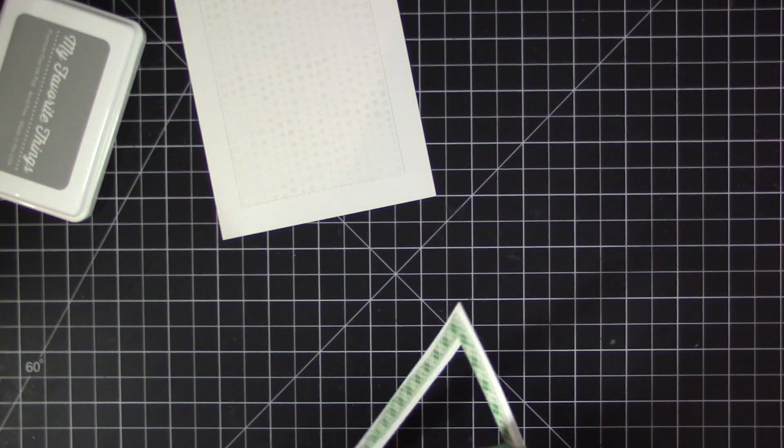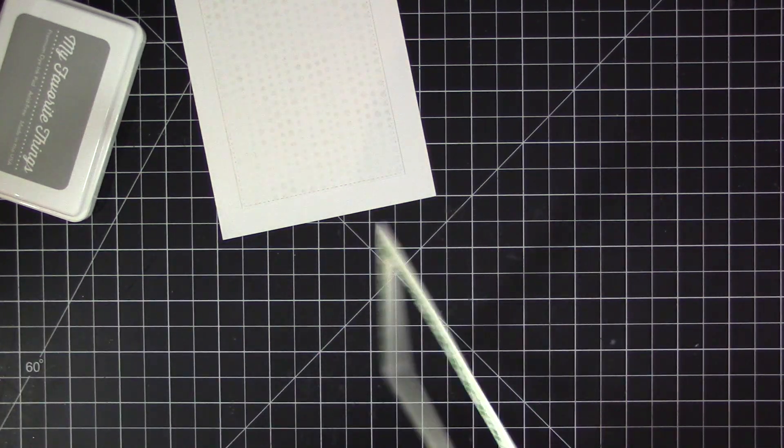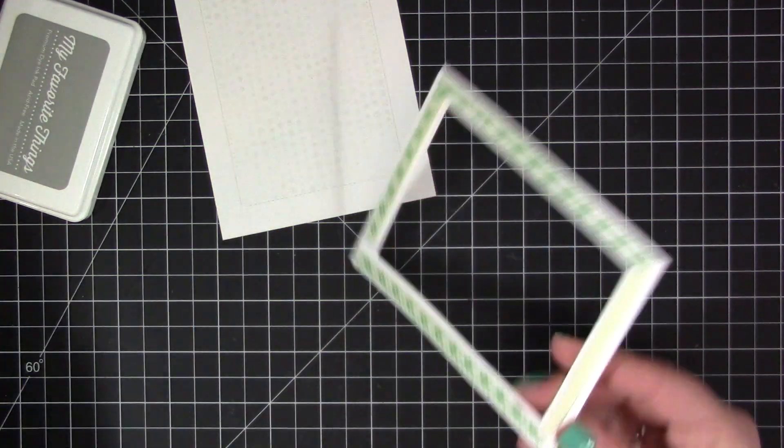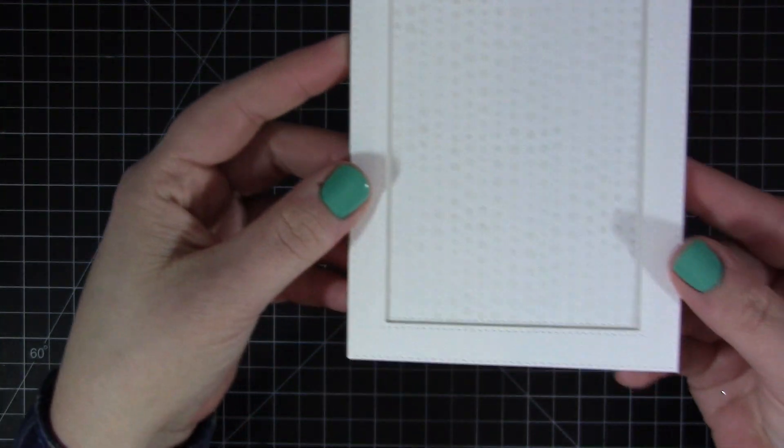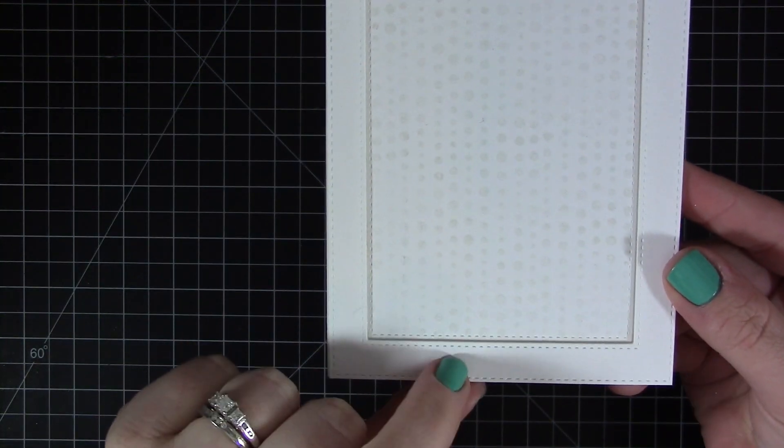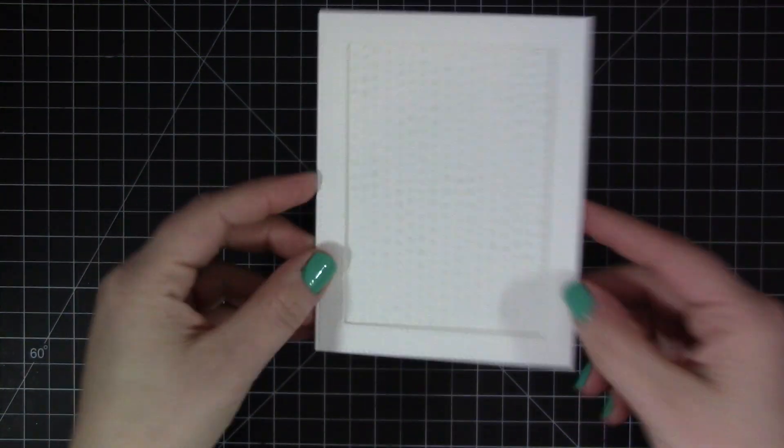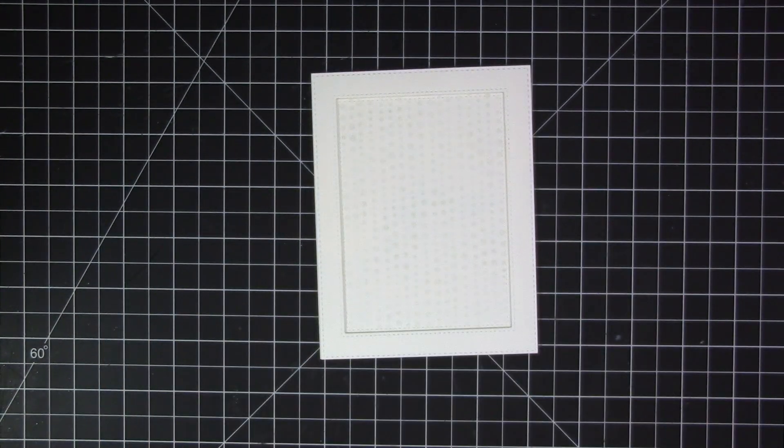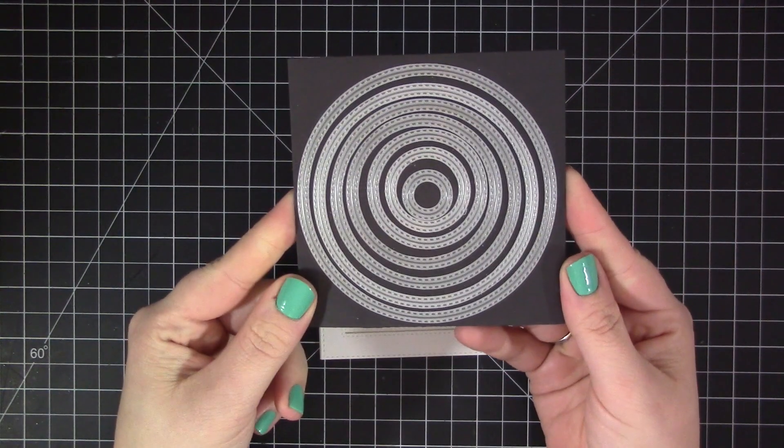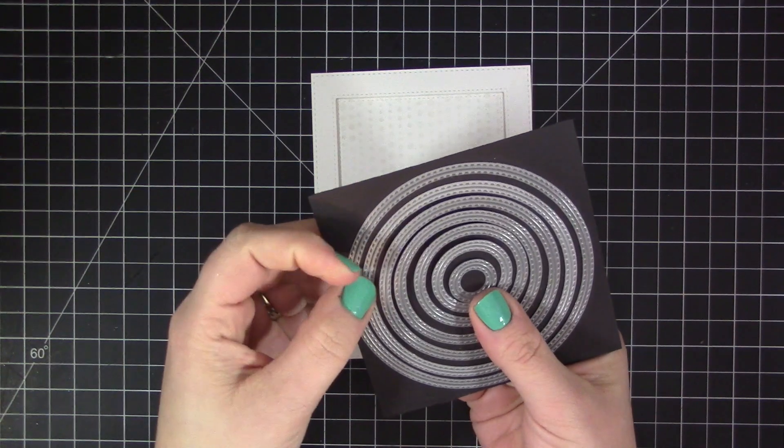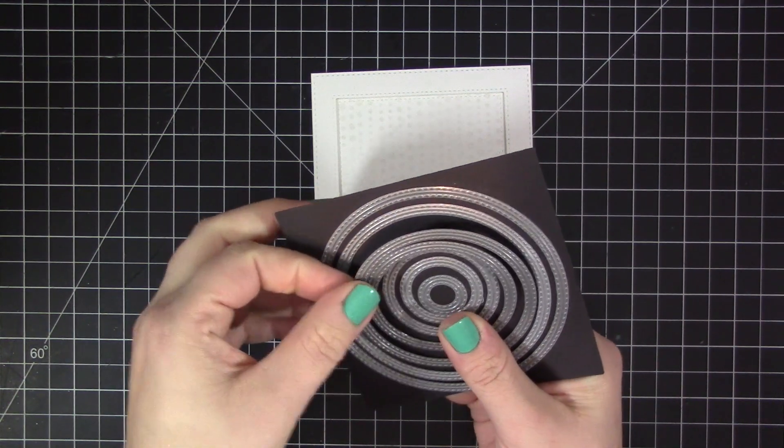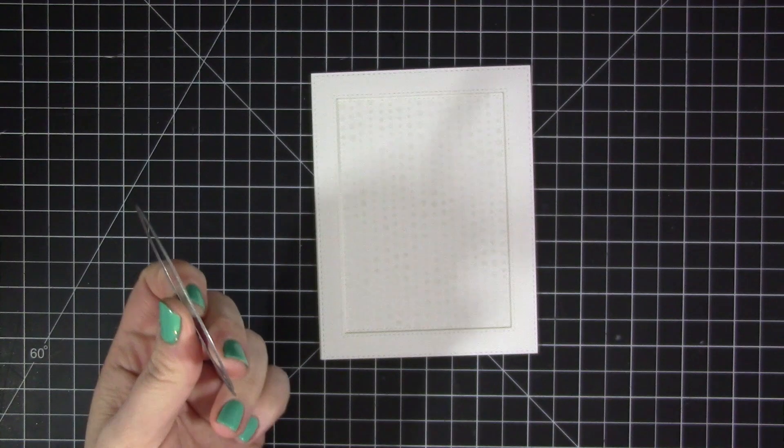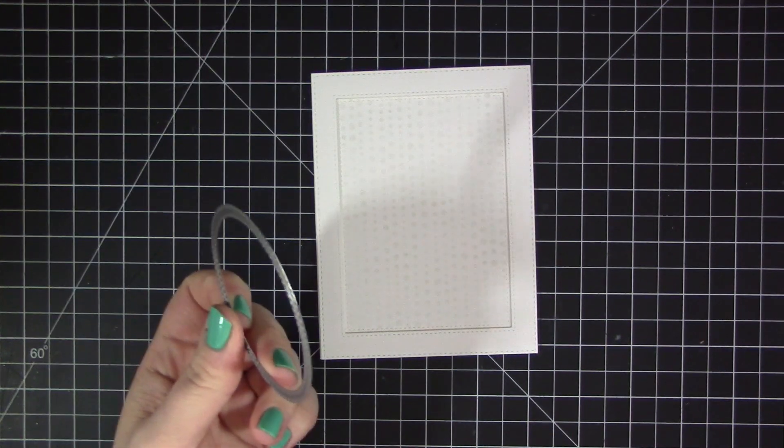Then I'm going to add foam adhesive to the outside piece, which will allow it to be raised up off the card and make it more dimensional when it's finished. You can see now I have that great stitch detail on both pieces. I have the inside panel adhered directly to the card base and the outside frame piece on foam adhesive to make them look like they're separate pieces even though we die cut them together.